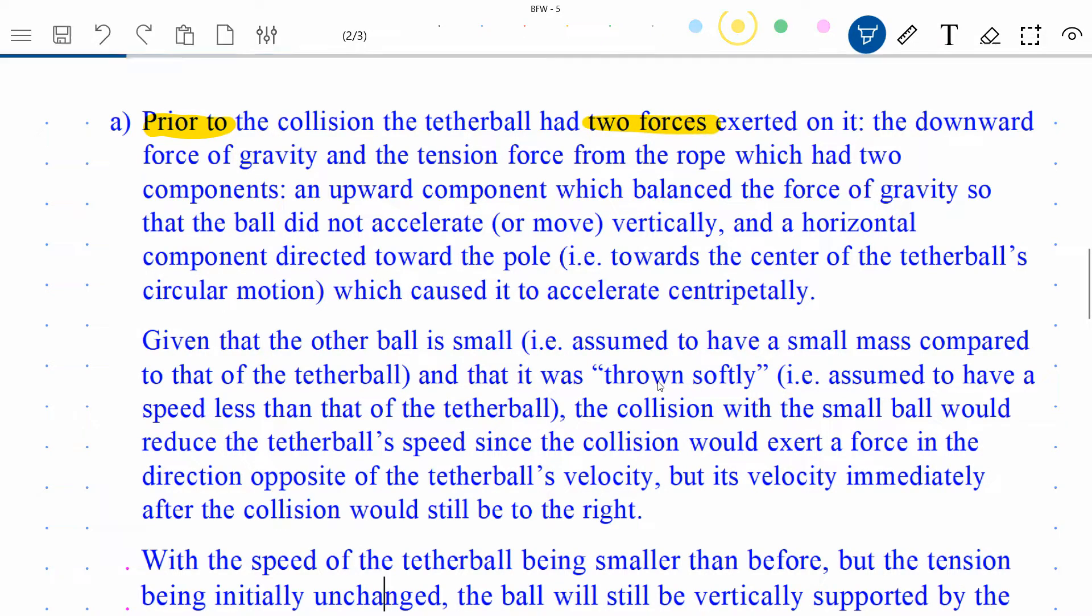prior to the collision, the tether ball had two forces exerted on it: the downward force of gravity and the tension force from the rope, which had two components. An upward component which balanced the force of gravity so that the ball did not accelerate or move vertically. So horizontally, it's just maintaining a fixed level. It's not moving up, it's not moving down. And a horizontal component which would be directed towards the pole, which really is to say towards the center of that circular motion. In fact, that's what was causing it to accelerate towards the center of the circle, or centripetally.